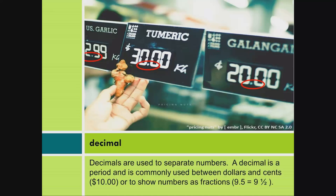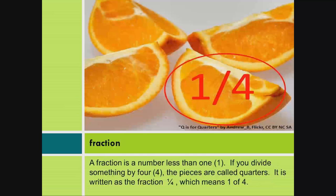Decimal. Decimals are used to separate numbers. A decimal is a period and is commonly used between dollars and cents, or to show numbers as fractions. For example, 9.5 equals 9 and one half.